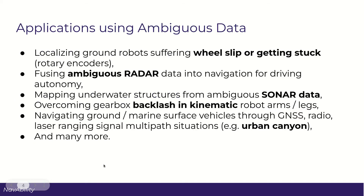This example is about including ambiguous data into a navigation and mapping solution. We wanted to highlight a few types of applications that could really benefit from this. If you're navigating or localizing a ground robot where the wheels are slipping or the robot's getting stuck, that's absolutely a case for this. If you're fusing ambiguous radar data into a navigation solution, maybe for driving or marine applications, that's also very applicable.